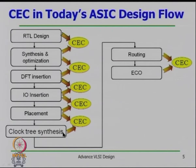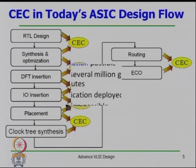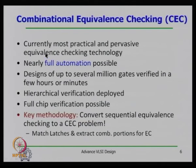That means before and after each transformation the functionality must remain equivalent. This shows the widespread use of equivalence checkers in today's design flow. Combinational equivalence checking is currently the most practical and pervasive equivalence technique — it is almost a fully automatic, push-button process: submit two designs and it will tell you whether both are equivalent.